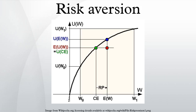The risk premium equals $10, or in proportional terms 25%. This risk premium means that the person would be willing to sacrifice as much as $10 in expected value in order to achieve perfect certainty about how much money will be received. In other words, the person would be indifferent between the bet and a guarantee of $40, and would prefer anything over $40 to the bet.